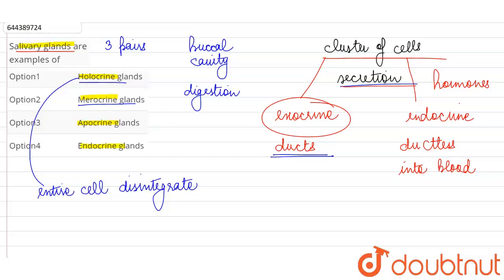Examples of such merocrine glands will be the tear glands, goblet cells, and salivary glands. So option B is our correct answer over here.